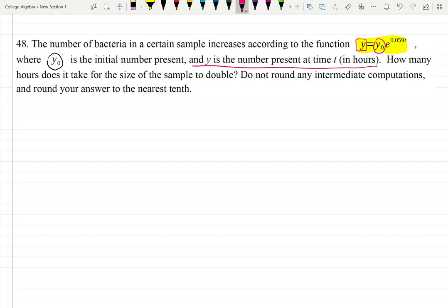y on the left-hand side is the number present at time t. So that's basically the end, right? If I wait for five seconds, y will give me how many bacteria I will have in five seconds. Well, t actually in hours. How many hours does it take? Okay, this phrase means they want me to solve for t.